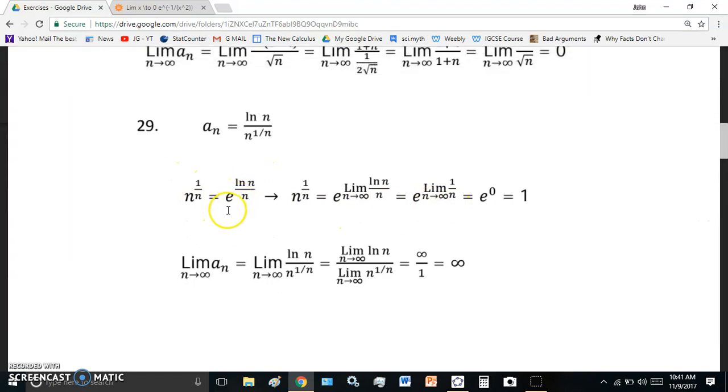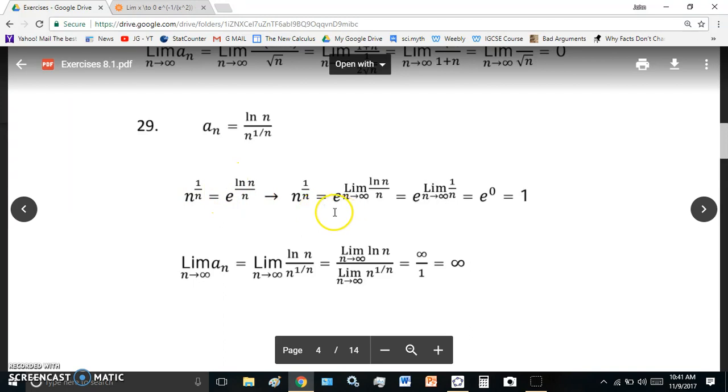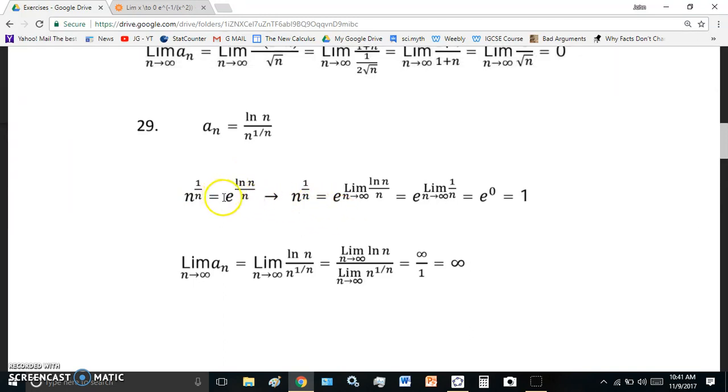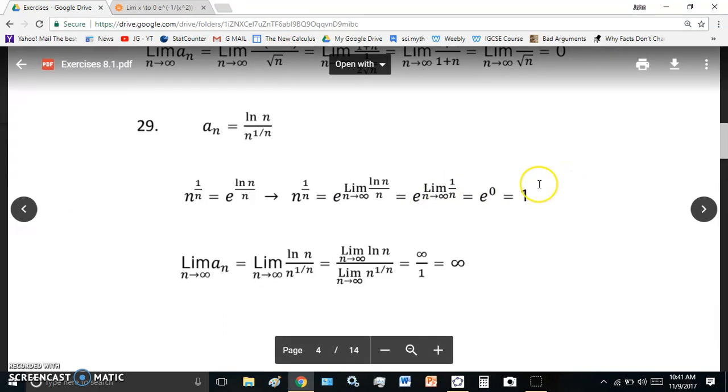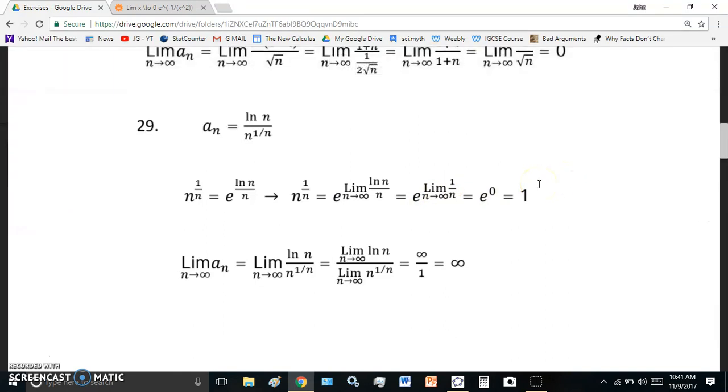And the process that we use here is first we change the form into an exponent. And then we transfer the limit from in front of the expression to the exponent. So all we are doing here is we are transferring it from in front of the e or the expression. And we are transferring it into the exponent. And then we calculate the limit of that exponent and evaluate the value of the whole expression. And we can do that simply because it will always produce the correct result. But there are exceptions, as we'll see in a moment.